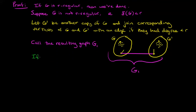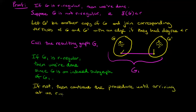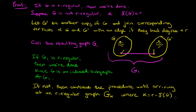If g1 is r-regular then we're done because g is an induced subgraph of g1. But if not, we just continue the same procedure until arriving at an r-regular graph g sub k, where k is the difference r minus the minimum degree. That will produce the desired r-regular graph which contains g as an induced subgraph, and that completes our proof.